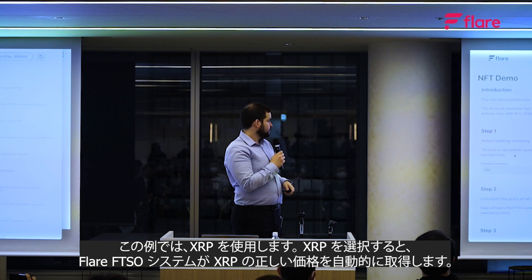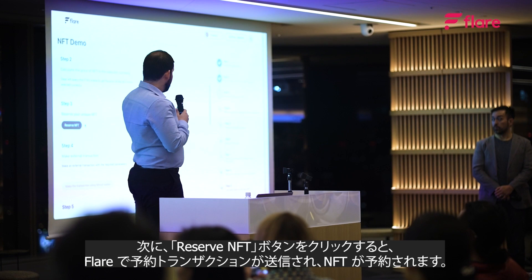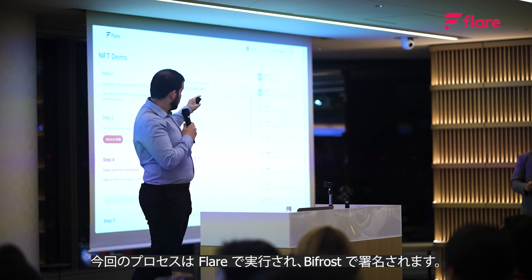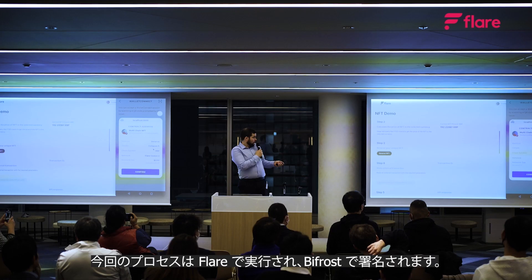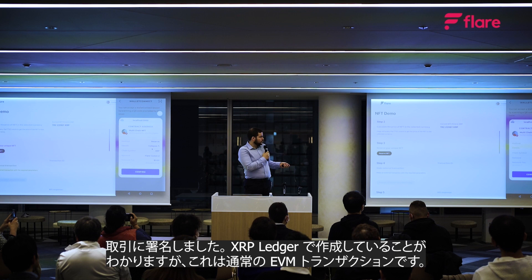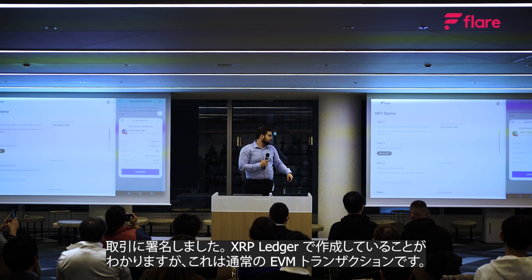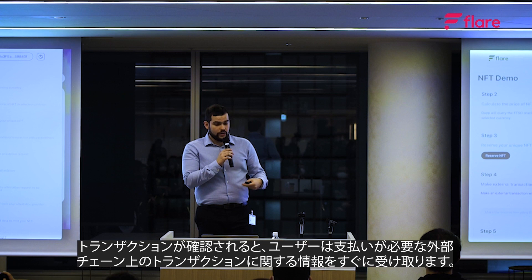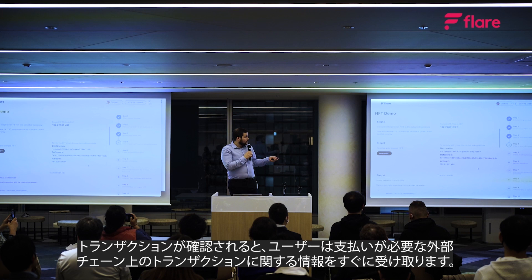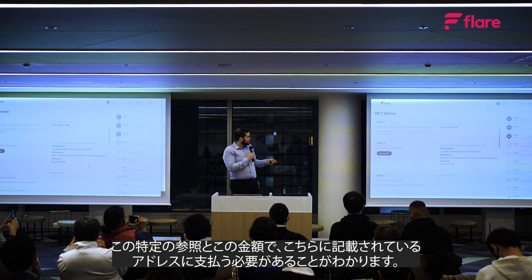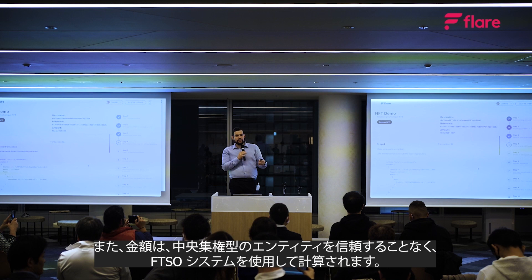Clicking 'Reserve NFT' sends a reservation transaction on Flare and we reserve an NFT. This is performed on Flare and signed with Bifrost. We sign the transaction — this is just a normal EVM transaction. Once the transaction is confirmed, the user immediately receives information about the transaction on the external chain that needs to be paid: the destination address, specific payment reference, and amount calculated using the FTSO system without trusting any centralized entity.